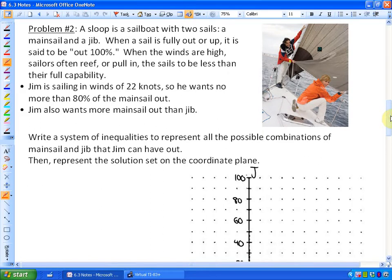This particular question, I will read it and then we will go over it. It says a sloop is a sailboat with two sails, a mainsail and a jib. When a sail is fully out or up, it is said to be out 100%. When the winds are high, sailors often reef or pull in the sails to be less than their full capability. Jim is sailing in winds of 22 knots, so he wants no more than 80% of the mainsail out. That is one constraint for this problem. The other thing is that Jim also wants more mainsail out than jib. So that is more criteria.